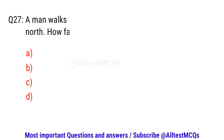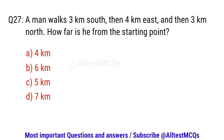Question number twenty-seven. A man walked 3 km south, then 4 km east, and then 3 km north. How far is he from the starting point? The right option is C. 5 km.